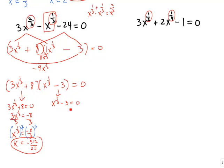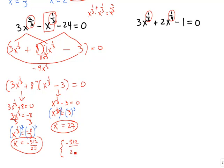For the second factor x^(1/3) + 3 = 0: subtract 3 to get x^(1/3) = −3. Cube both sides: x = (−3)³ = −27. Wait — actually subtracting gives x^(1/3) = −3, and (−3)³ = −27, but since we moved 3 to the right: x^(1/3) = 3, so x = 27. Our two solutions are −512/27 and 27.